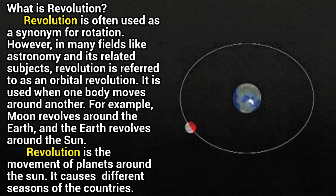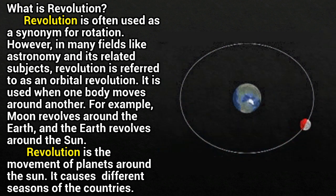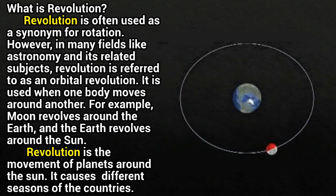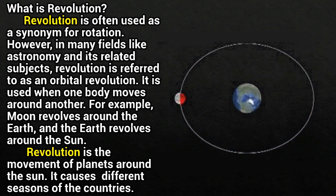Revolution is often used as a synonym for rotation. However, in many fields like astronomy and its related subjects, revolution is referred to as an orbital revolution. It is used when one body moves around another. For example, the Moon revolves around the Earth, and the Earth revolves around the Sun. Revolution is the movement of planets around the Sun.